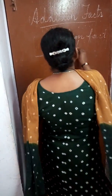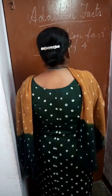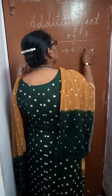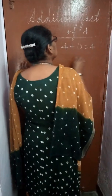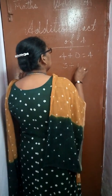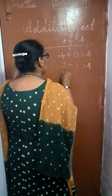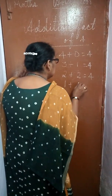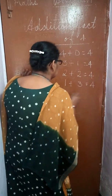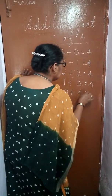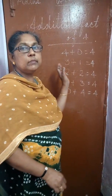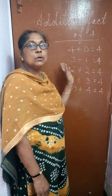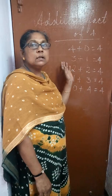Addition fact for 4: 4 plus 0 is equal to 4, 3 plus 1 is equal to 4, 2 plus 2 is equal to 4, 1 plus 3 is equal to 4, then 0 plus 4 is equal to 4. So, children, now you have learned addition facts of 1, 2, and 4. Like this, you can do till 10.